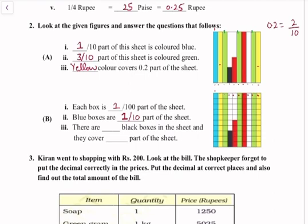There are also black boxes in the sheet. Counting the black boxes: 1, 2, 3. There are 3 black boxes in the sheet and they cover 3 by 100 part of the sheet, as there are a total of 100 blocks.